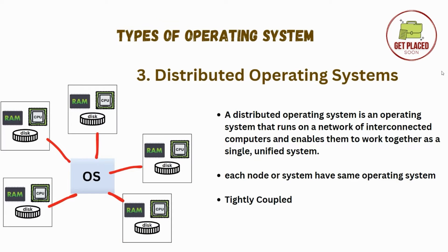Moving ahead, we have distributed operating system. Distributed operating system is an OS that runs on a network of interconnected computers. You can see there are multiple computers — five computers — but they are connected to one single operating system. Each node or system has their own CPU, RAM, disk, etc., but they share the same operating system.